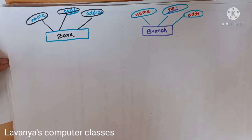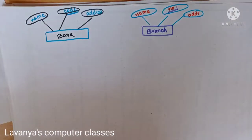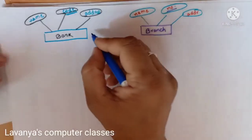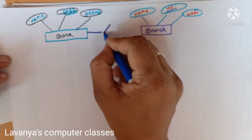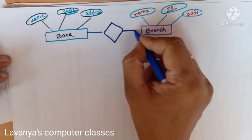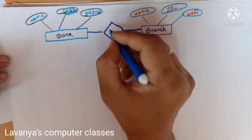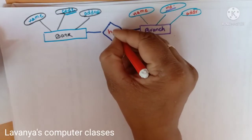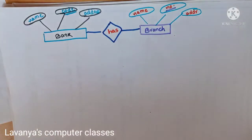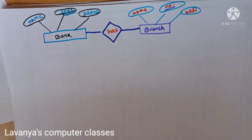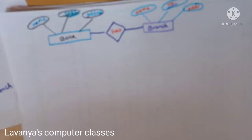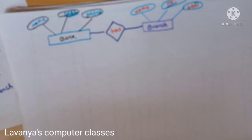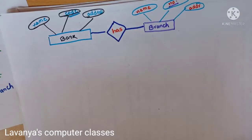Now we maintain one relationship between bank and branch. The relationship diagram is represented with a diamond shape. The relationship name is 'has' — bank has branch. Bank is one entity set and branch is another entity set; between these two there is the relationship 'has'.